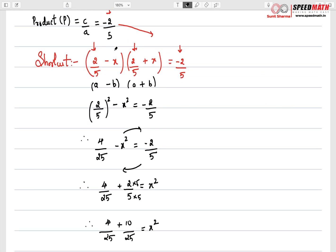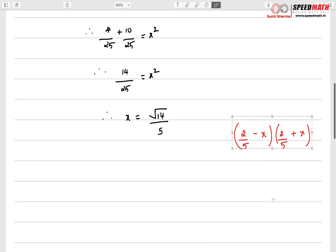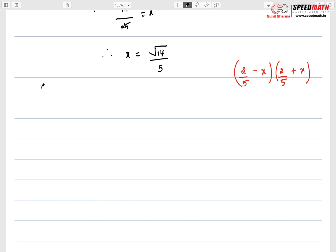So I told you initially, once you have found out the value of x, the first bracket, if you substitute value of x here, you will get first root and if you substitute value of x, you will get the second root. So the roots are 2/5 plus minus x. So value of x is √14/5. So let us take common denominator here. The common denominator is 5. And then here it comes 2 ± √14. There you have, ladies and gentlemen, these are the roots.